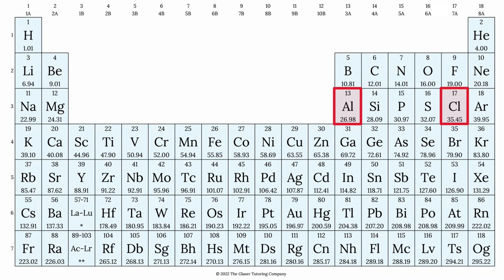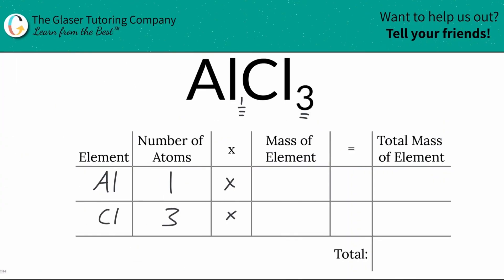So here aluminum is 26.98. Now if you're solving for molar mass then the units are grams per mole. If you're solving for molecular mass those units will be in AMU. So aluminum is 26.98 as I just mentioned and chlorine is going to be about 35.45.